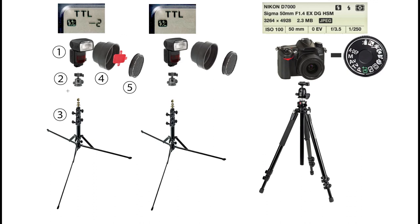On flash number two I've got it set for TTL minus two with the red gel, pointing at the wall. The one pointing at the subject is set on regular TTL, with the SB900, the Joby, the stand, and the Gary Fong light sphere collapsible snoot with grid. Use coupon code YouTube20 to save 20% on Gary Fong light sphere products at the store — it now comes with a dedicated DVD for Nikon, Sony, Pentax, or Canon.